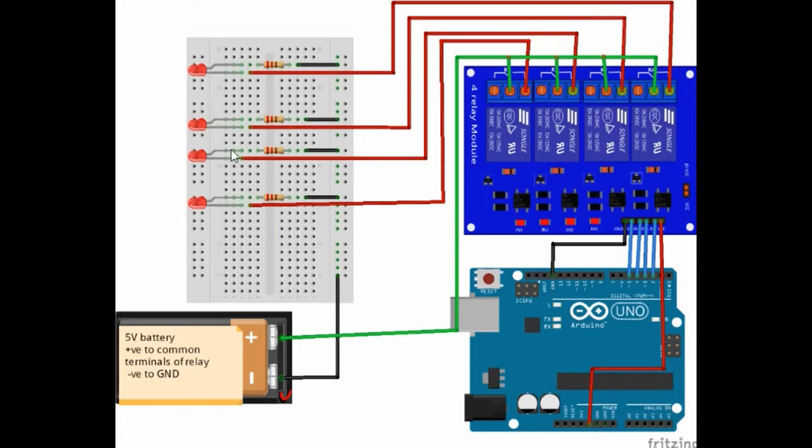So this is our relay, this is the Arduino board, and we are going to connect each of these LEDs to the corresponding relay. So the Arduino board is going to be programmed in such a way that whenever each of these relays is on, the LED lights. When it is off, the LED goes off.